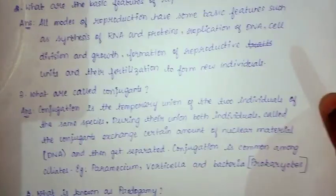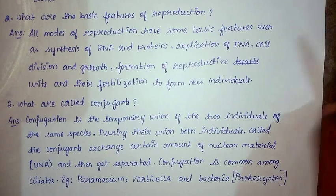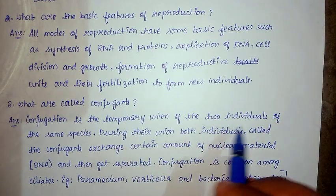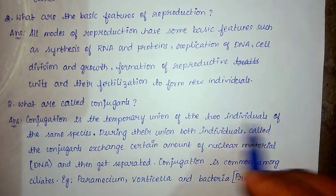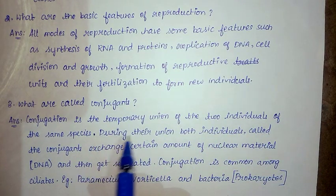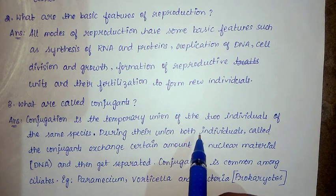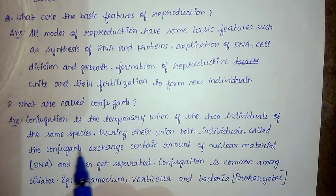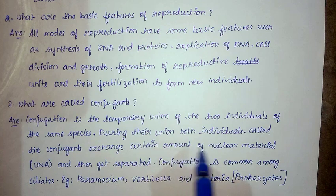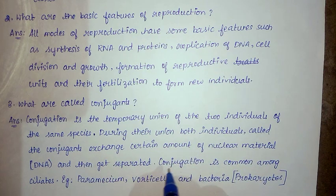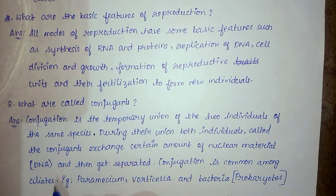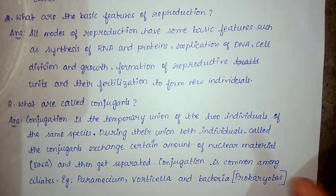For the third question: conjugation is the temporary union of two individuals of the same species. During their union, both individuals — called the conjugants — exchange a certain amount of nuclear material (DNA) and then get separated. Conjugation is common among ciliates; for example, Paramecium, Vorticella, and bacteria (prokaryotes).